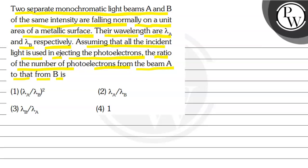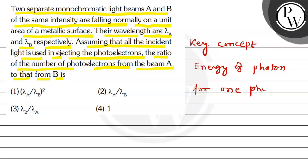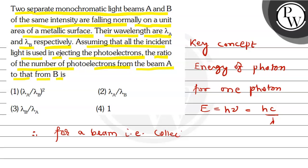So bacho, here we discuss the key concept. Our key concept is the energy of a photon. For one photon, E equals h nu or h c by lambda. Therefore, for a beam that is a collection of n photons, energy E equals n times h c by lambda. So this formula we use in the solution.